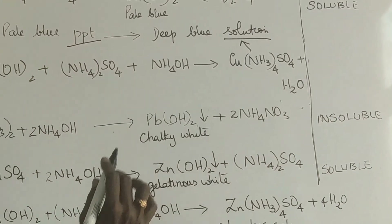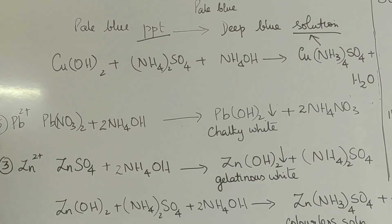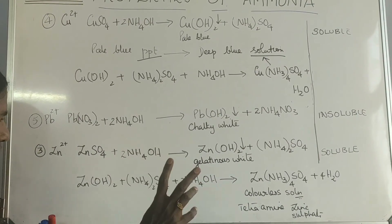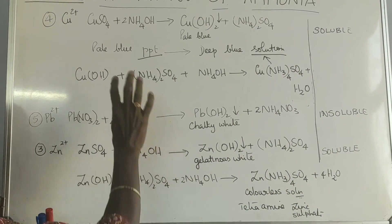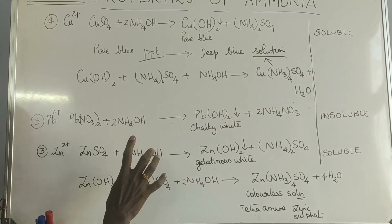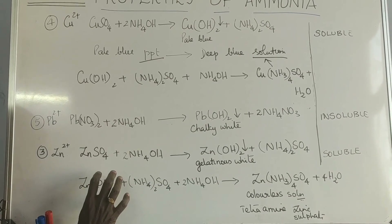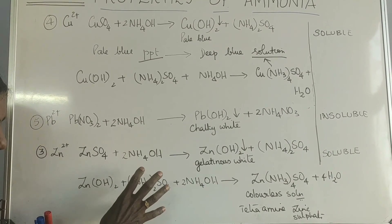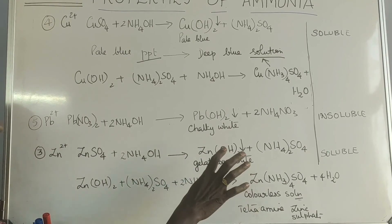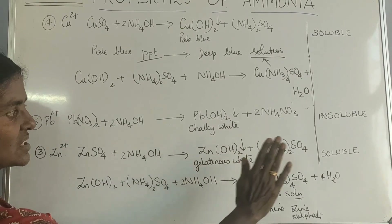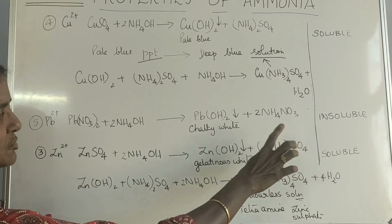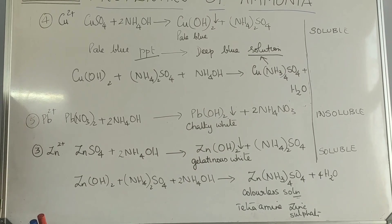Two key differences: the ions soluble in excess are zinc and copper — zinc becomes a colourless solution, copper becomes deep blue. To differentiate lead and zinc, both form white precipitates, but zinc is gelatinous white and dissolves in excess to a colourless transparent solution, whereas lead remains as an insoluble chalky white precipitate.